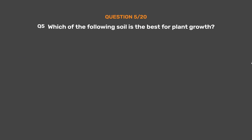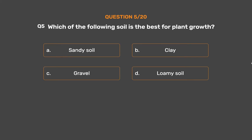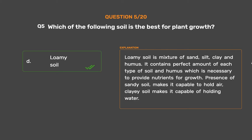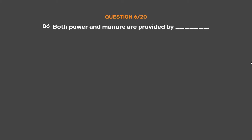Question number five: which of the following soil is the best for plant growth? Option A: sandy soil. Option B: clay. Option C: gravel. Option D: loamy soil. The correct answer is option D, loamy soil. Loamy soil is a mixture of sand, silt, clay, and humus. It contains the perfect amount of each type of soil and humus, which is necessary to provide nutrients for growth. Sandy soil makes it capable of holding air; clay soil makes it capable of holding water.